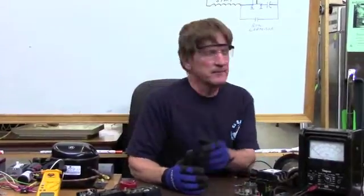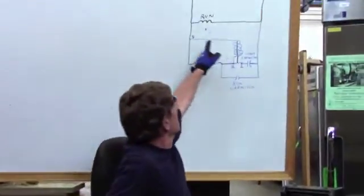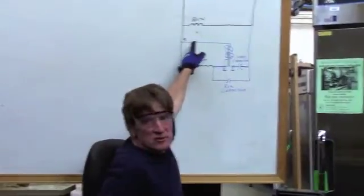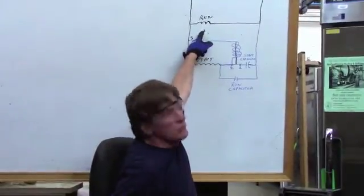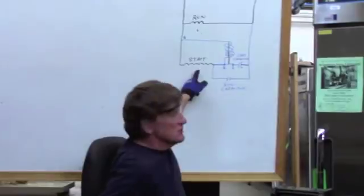A potential relay is very similar to any kind of contactor that you might face, except it has a slightly higher impedance. If we take a look to my left, we will see a surrogate with a run winding and a start winding.